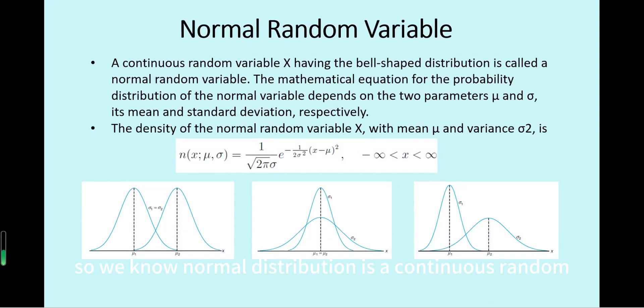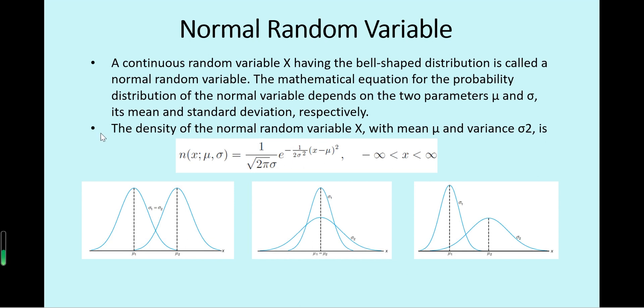Normal distribution is a continuous random distribution which has the bell shape in its density curve.